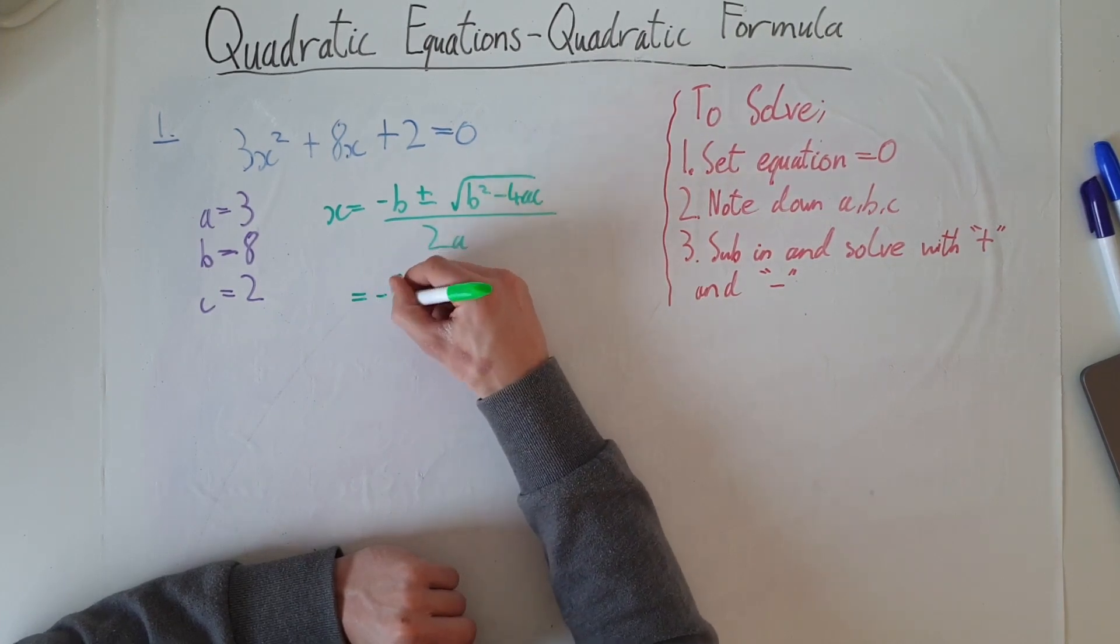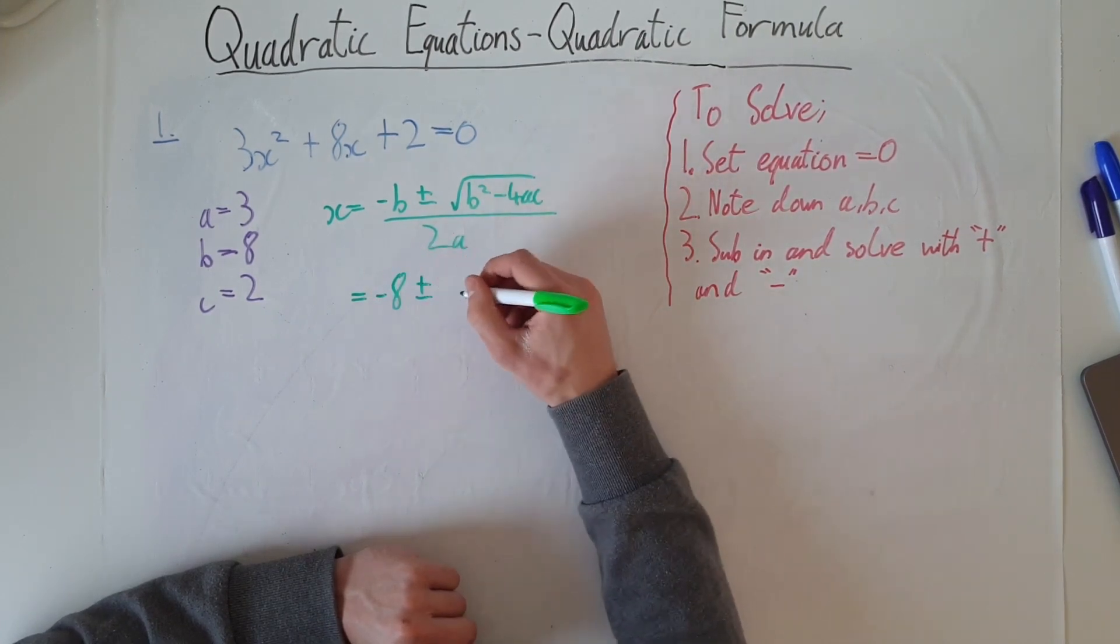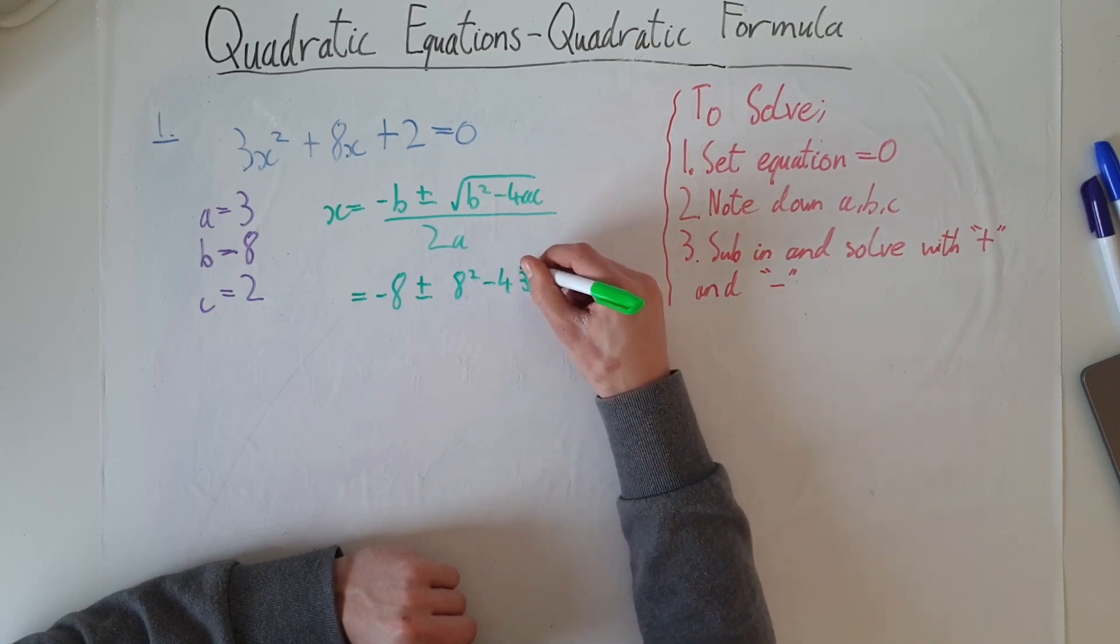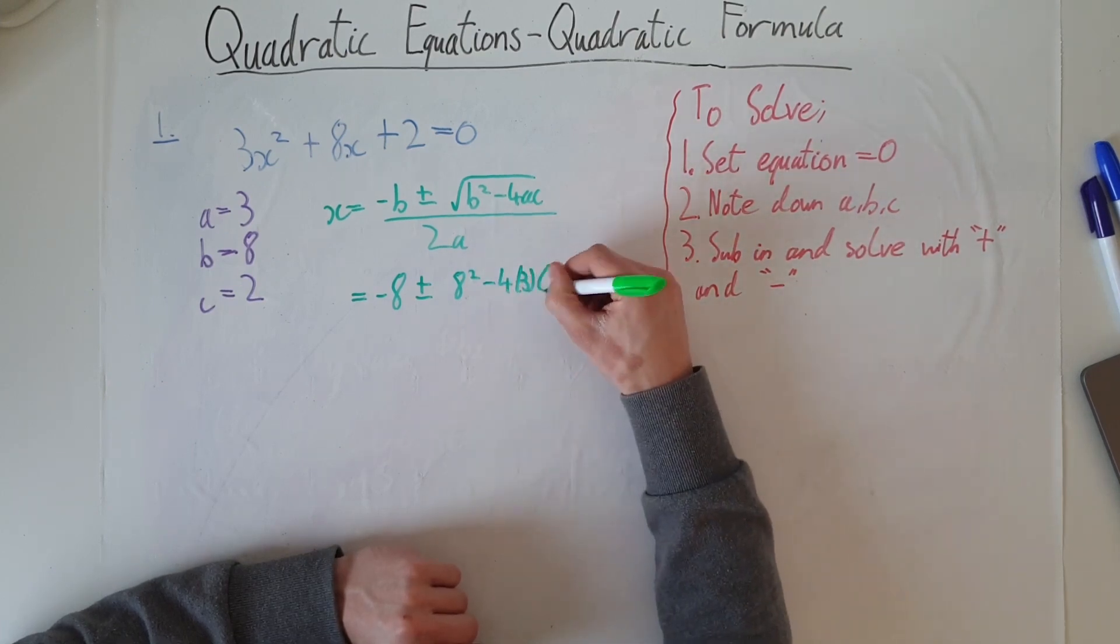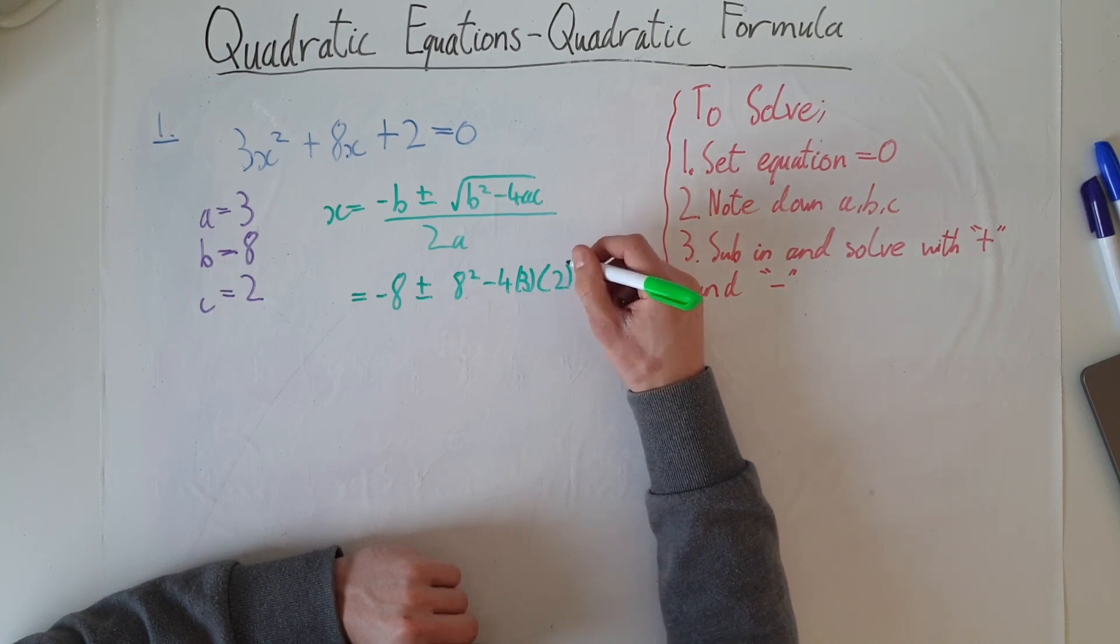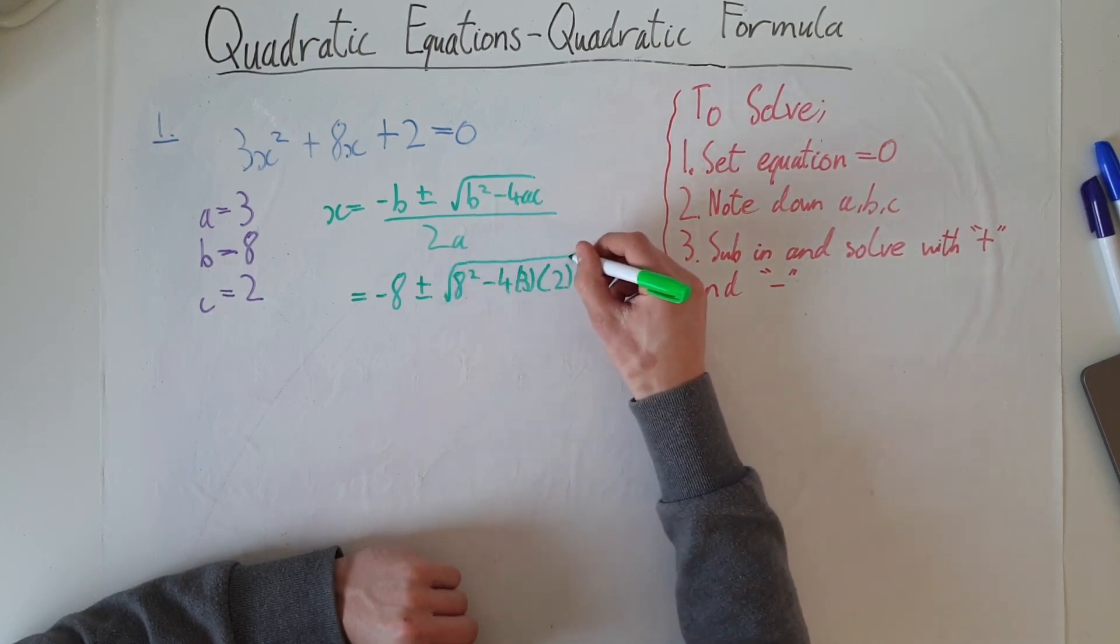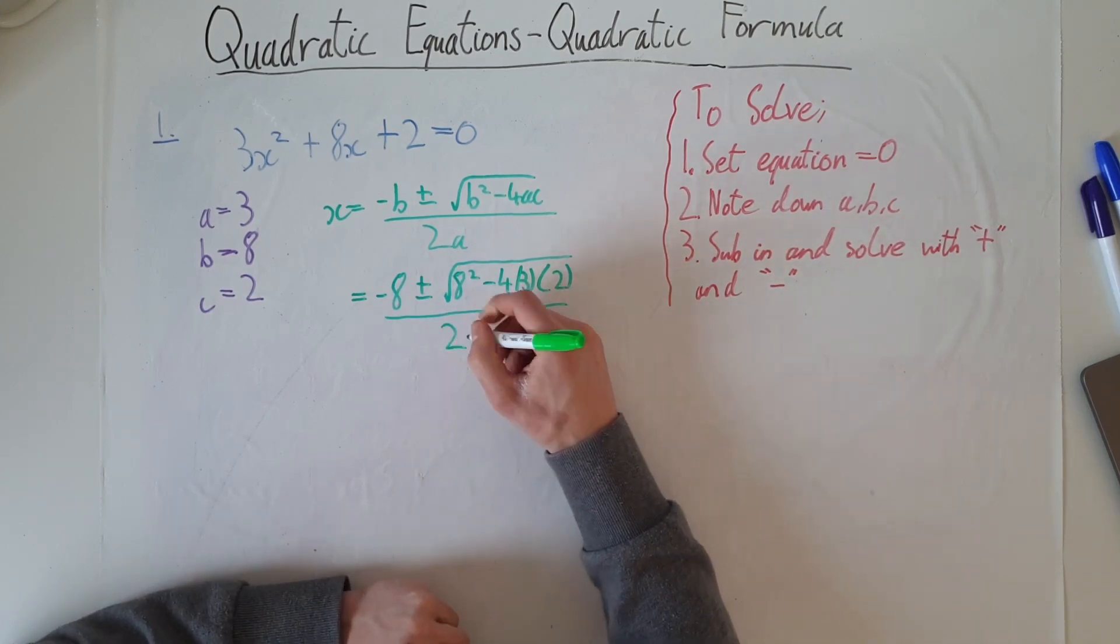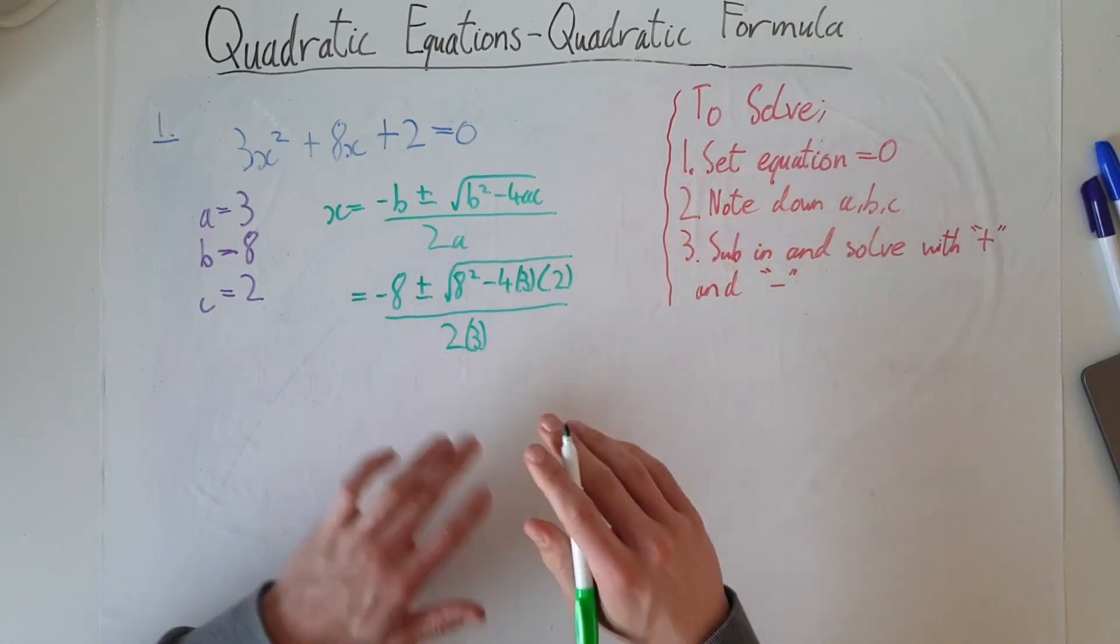From negative b, so negative 8, still plus or minus, 8 squared minus 4 multiplied by 3 - remember the brackets just mean multiplied - and then c is 2, and that's all in a square root, all over 2 multiplied by 3. Now we've got this, what we have to do is deal with the plus or minus.